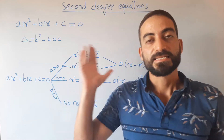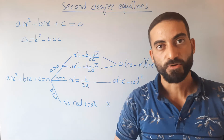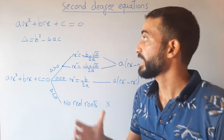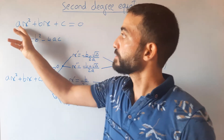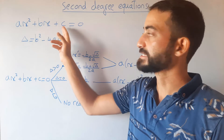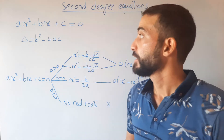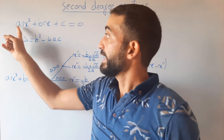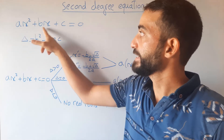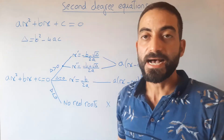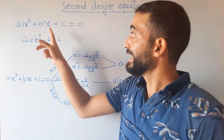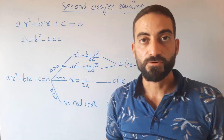Our lesson today: second degree equation. A second degree equation, or quadratic equation, is of the form ax² + bx + c = 0, where a is not equal to zero, and a, b, c are the coefficients of this equation, and x is the unknown.